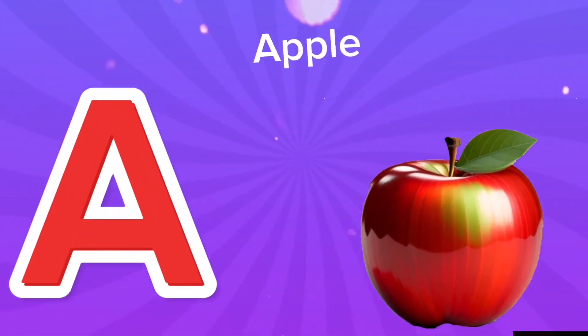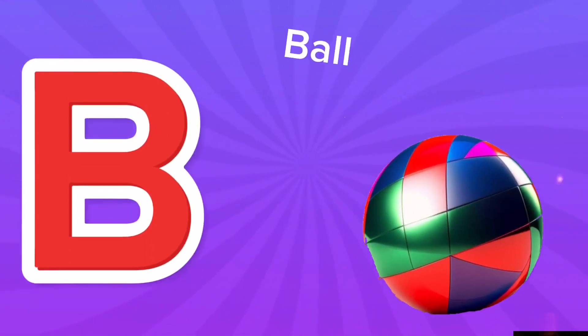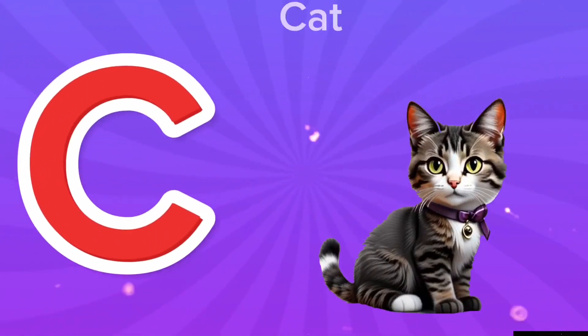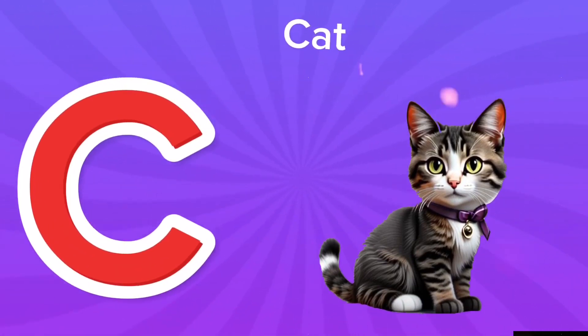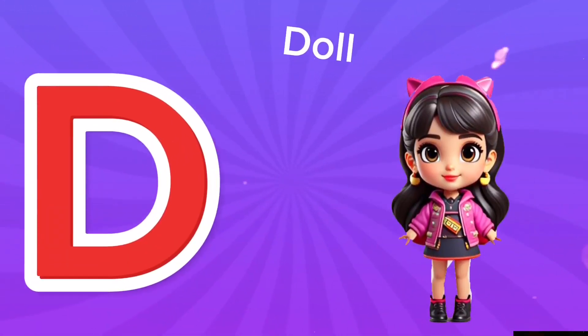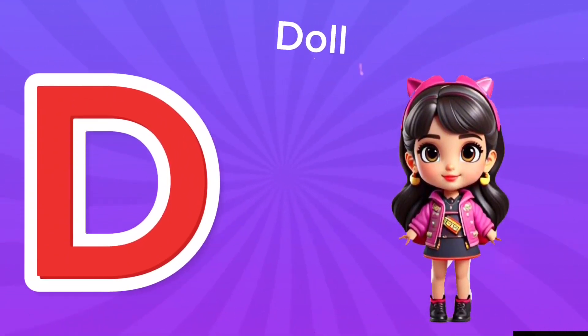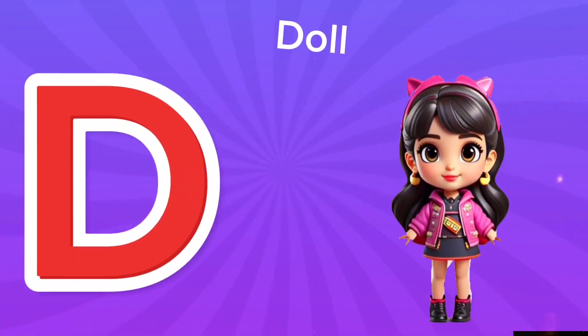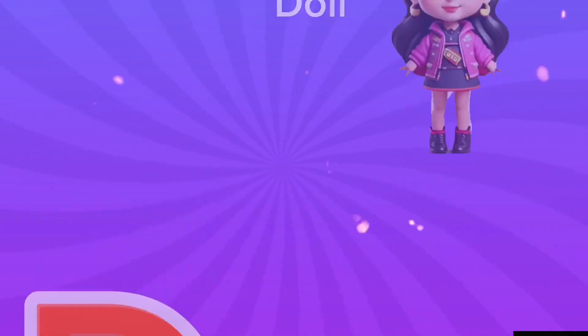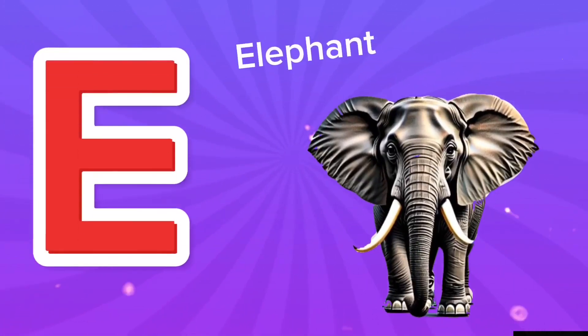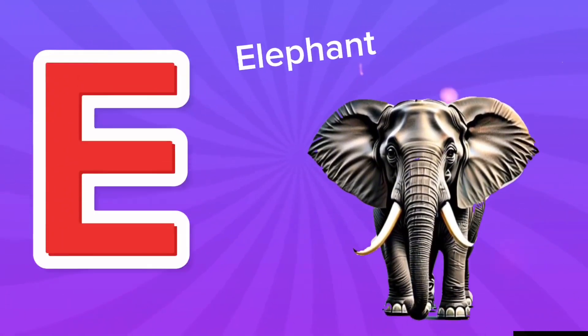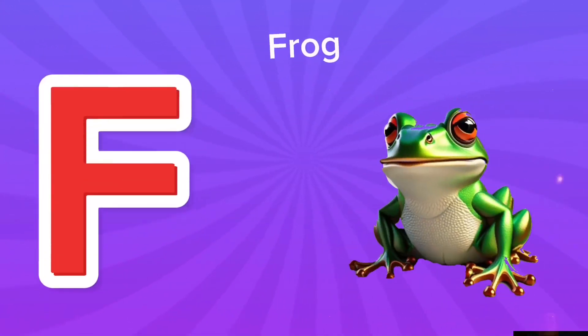A is for apple, a-a-apple. C is for cat, c-c-cat. D is for doll, d-d-doll. E is for elephant, e-e-elephant.